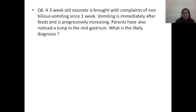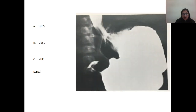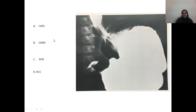Question number 6: a 3-week-old neonate is brought with complaints of non-bilious vomiting since the last 1 week. Vomiting is immediately after feeds and is progressively increasing. Parents have also noticed a lump in the mid-gastrium. The image shows a huge dilated stomach with a narrow pylorus, and this is diagnostic of idiopathic hypertrophic pyloric stenosis.